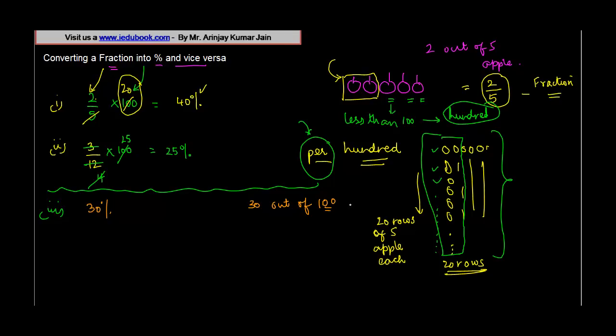So what's the total number of items? Total number of items is hundred. And how much percentage we are taking? We are taking thirty. In fractions, when you have to write, what do you mean? Two out of five, which means two divided by five. That's what we have written here.